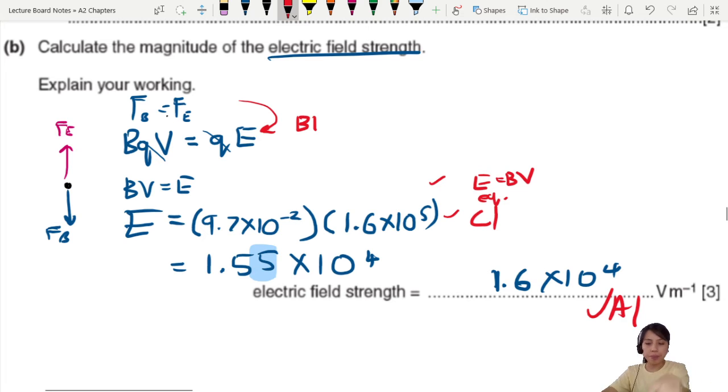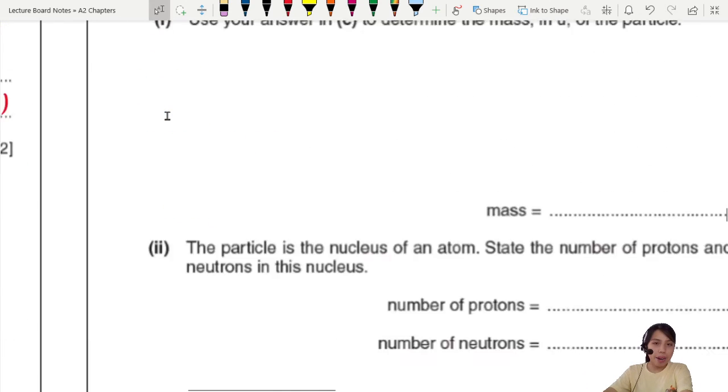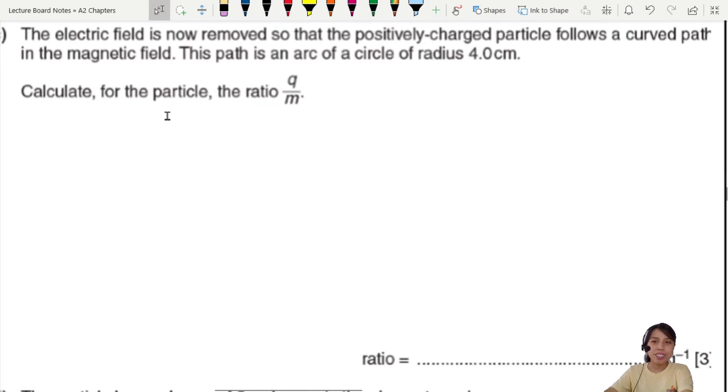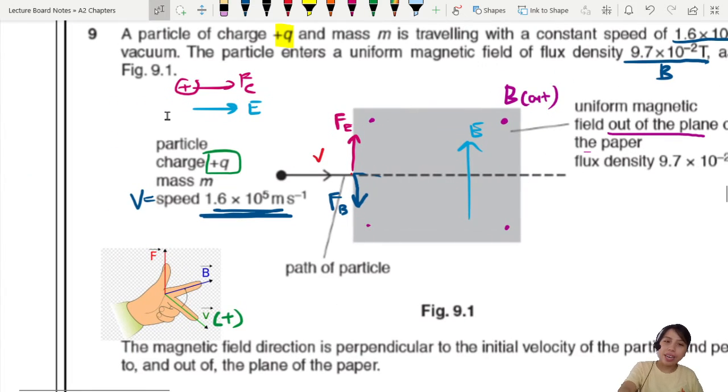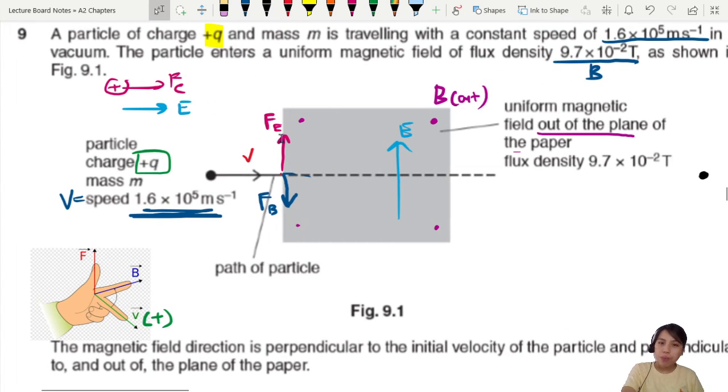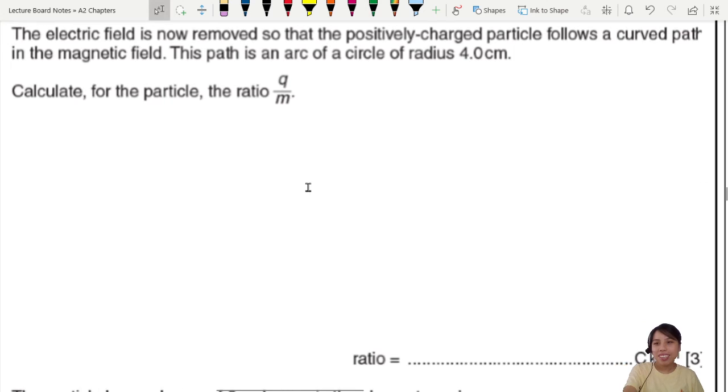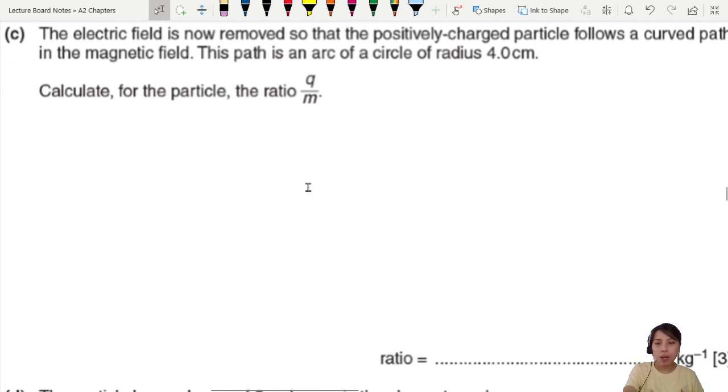Let's look at part C. The electric field is now removed. Oh no! What happens when there's no electric field? Just now they are nice in a straight line, but now you remove electric field, so this upward force is now gone, removed, no more. Where would the particle curve?